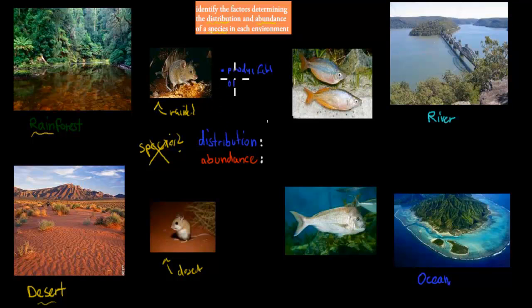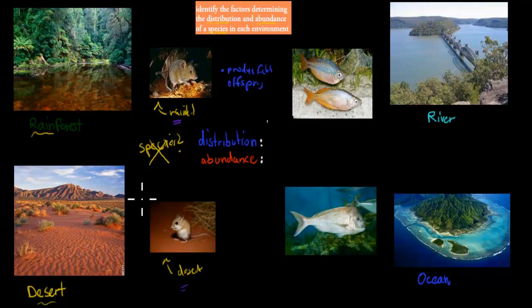These two mice need to be able to have a baby together, and that baby needs to be able to reproduce as well. These can't. So these look very similar, but they're actually quite different because they're both adapted to their own environment. These are different species of mice.